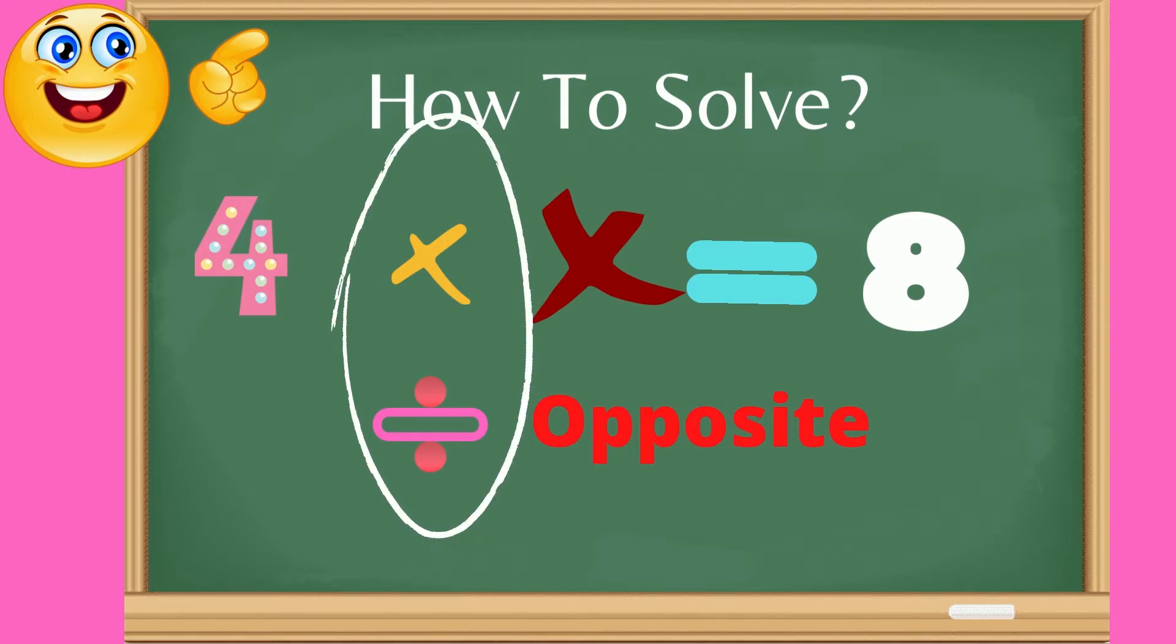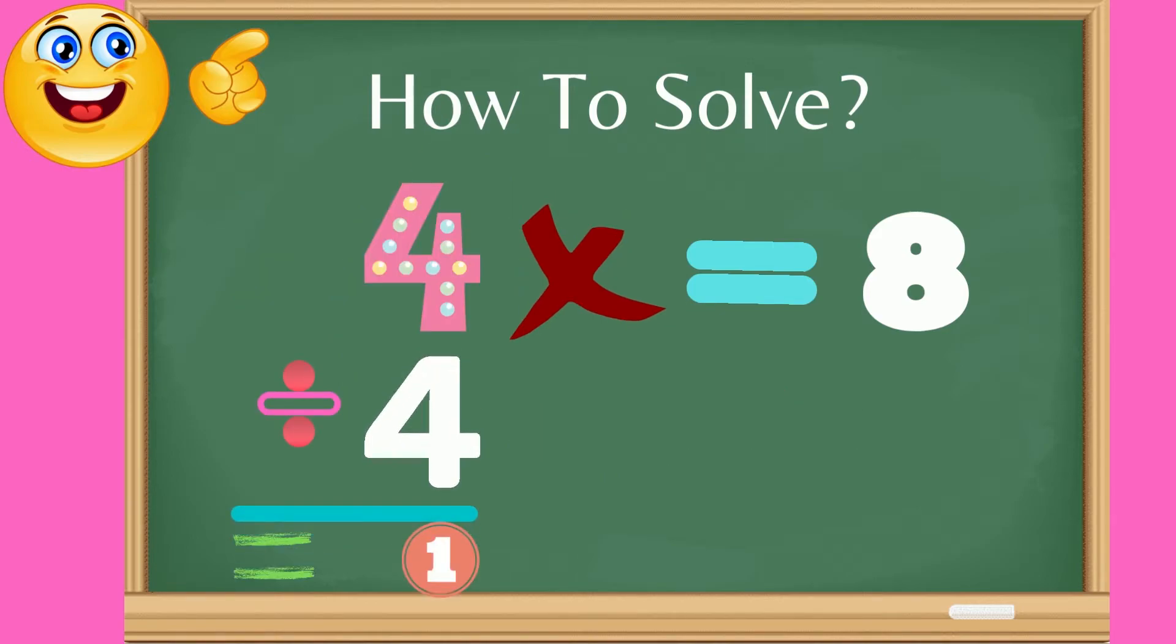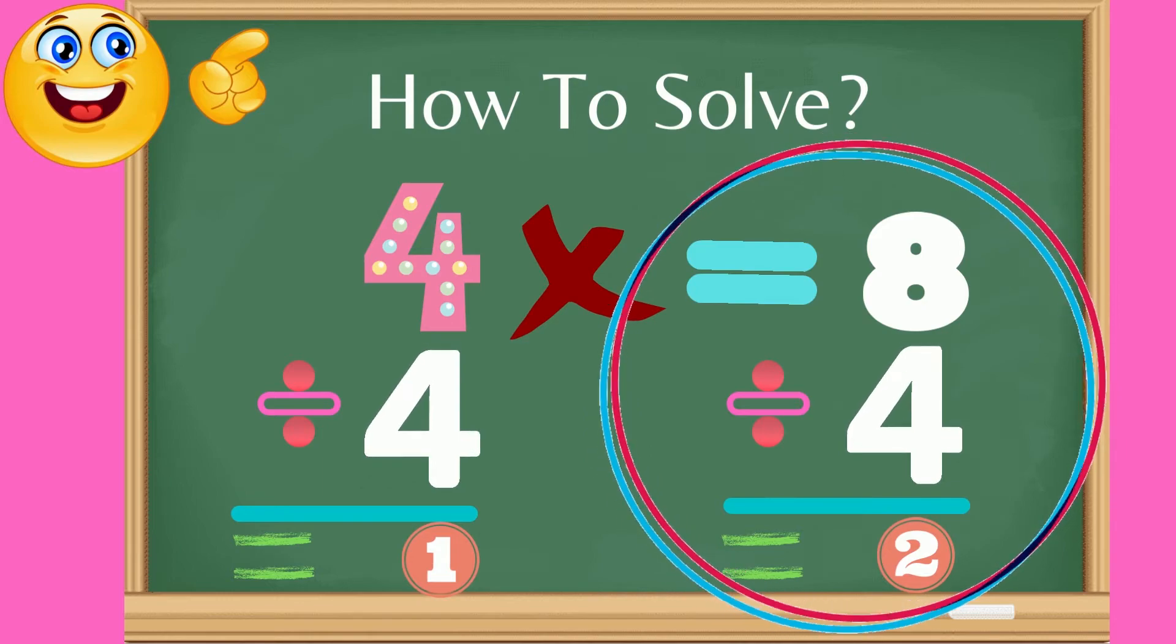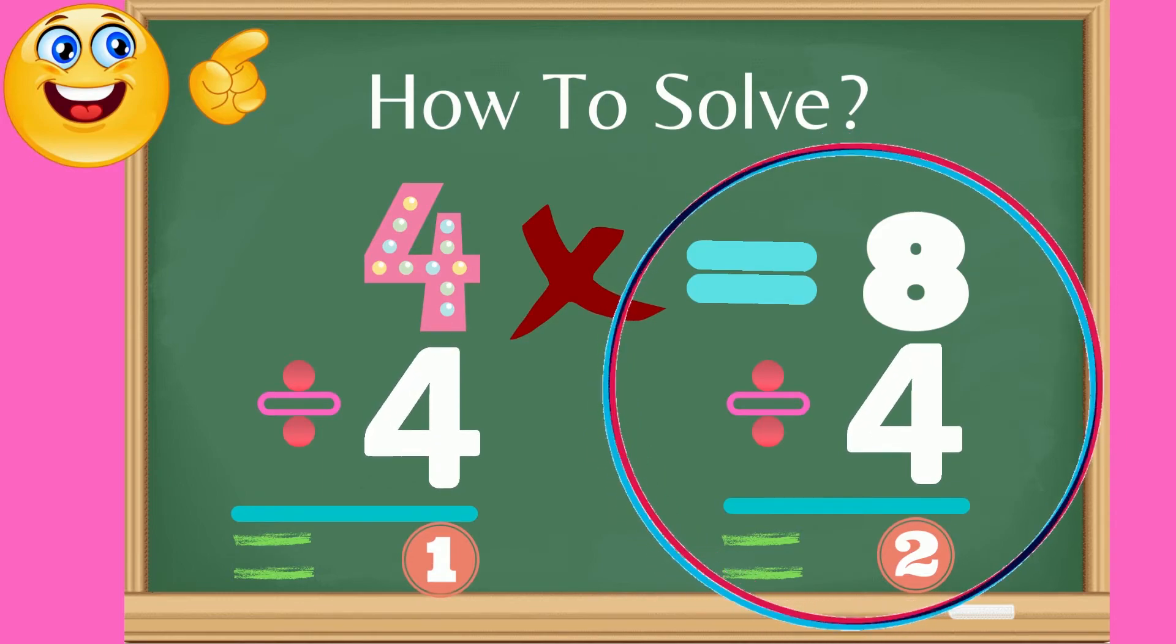Solving for x, 4x is equal to 8. Gusto natin kunin muna ang value ng x sa one side ng equation natin. At magagawa lang natin yan sa pamamagitan ng pagdivide natin ng 4. Bakit divide? Ang gagamitin natin, ang opposite sabi natin, gamitin na para ma-eliminate natin, dapat opposite ng multiplication. Since it's multiplication, divide ang gagawin natin. And by doing that, sa one side, gawin din natin sa kabilang side yan. Divide din natin ng 4 ang 8. That would be 8 divided by 4 equals 2.